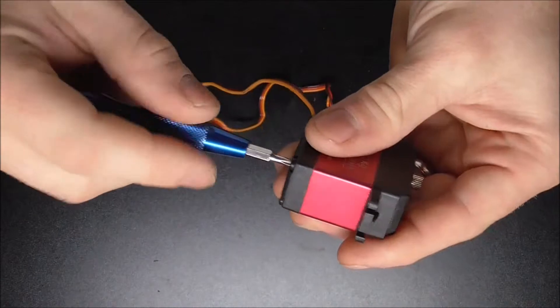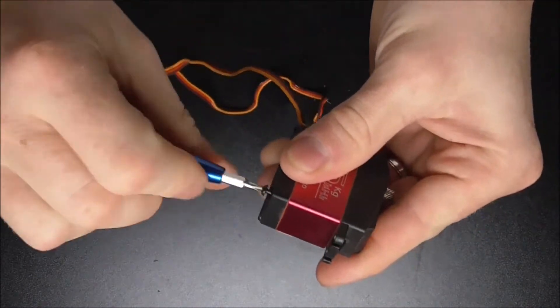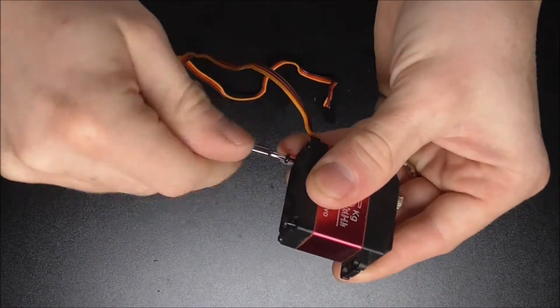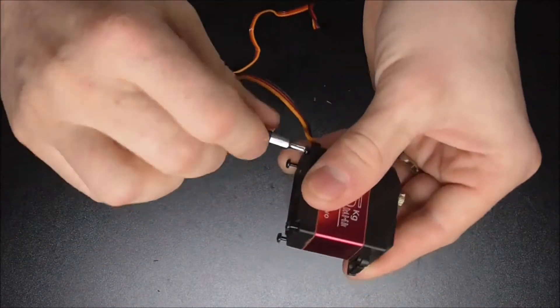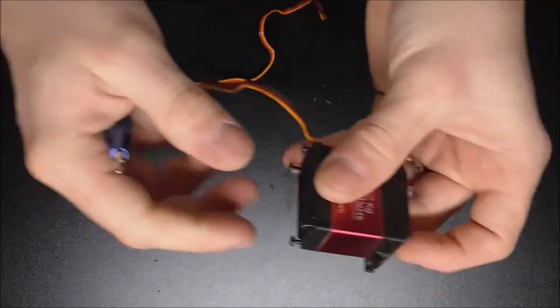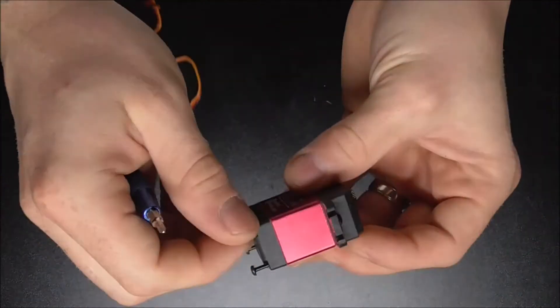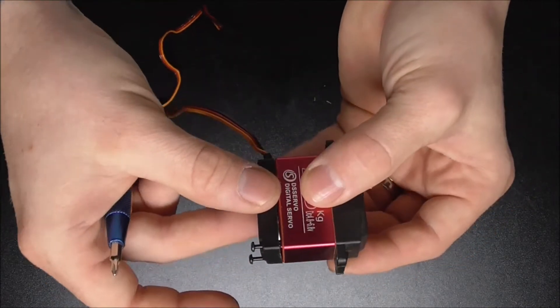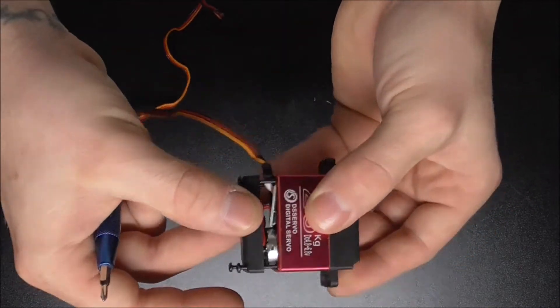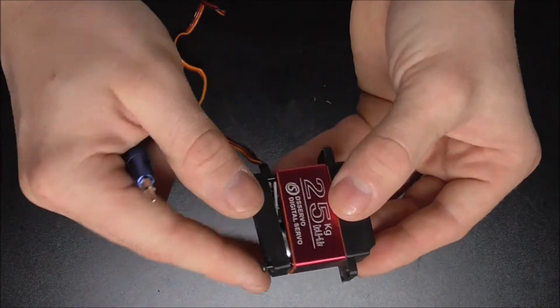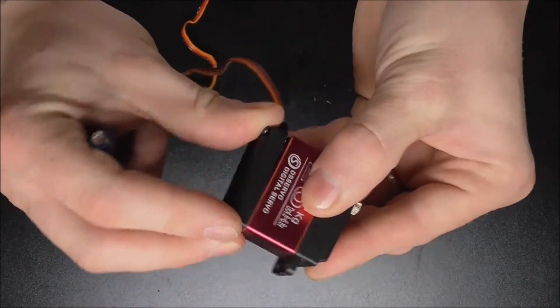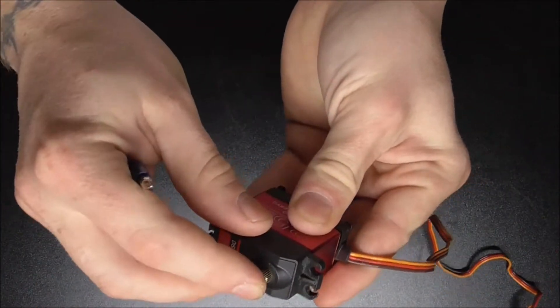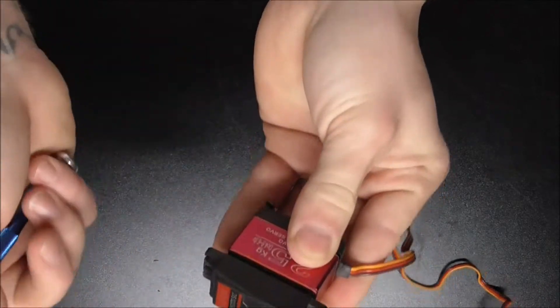If you guys are not familiar with taking apart a servo, you got four of these long screws here and then the bottom will come off, but that's usually just your motor and electronics. The gears are going to be on the top side, of course. So I usually just hold that bottom, put my finger here, and pop that top up.